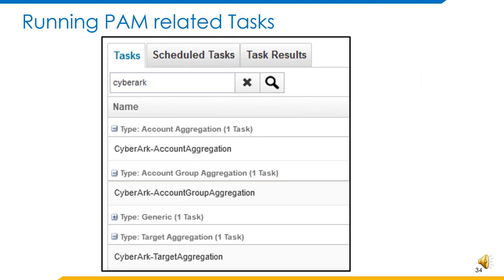Now that all the configuration is completed on the SailPoint end, data from CyberArk has to be fetched into SailPoint. Various details that shall be fetched include users, safes, permissions and groups that are present in CyberArk. These will be centrally managed using the PAM UI of SailPoint as well as the request access, certifications and various other features of SailPoint.